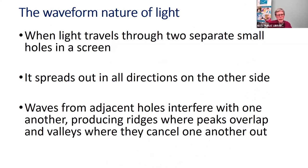What about the waveform nature of light? One classical way of illustrating this is to have a screen with two holes and shine light on it. The light passes through both holes, spreads out from both, and they overlap — at some points they're additive and create larger waves; in other places they cancel one another out. That's called interference. It's a classical phenomenon related to waves — like throwing a stone in a pond and seeing the ripples move out.